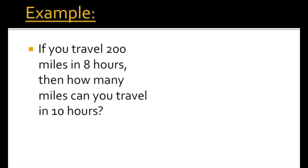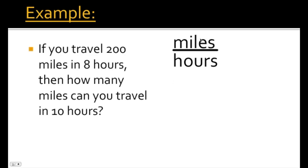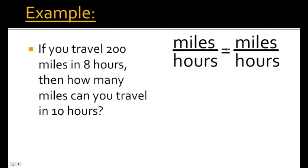Take a look at this example. If you travel 200 miles in 8 hours, how many miles can you travel in 10 hours? We're talking about miles per hour, so our ratio is miles per hour. Because the left side of the proportion is set up as miles per hour, we have to make sure the right side is also miles per hour. We know we can travel 200 miles in 8 hours. So we'll have 200 over 8 — miles go on top, 8 hours on the bottom.